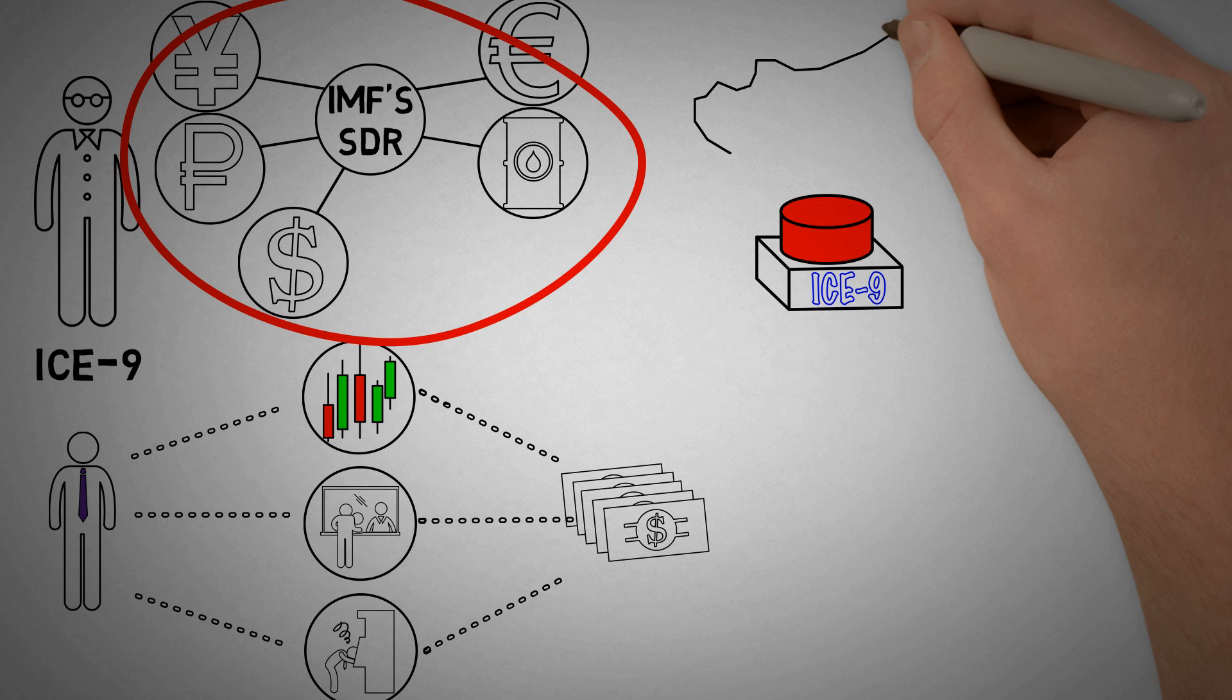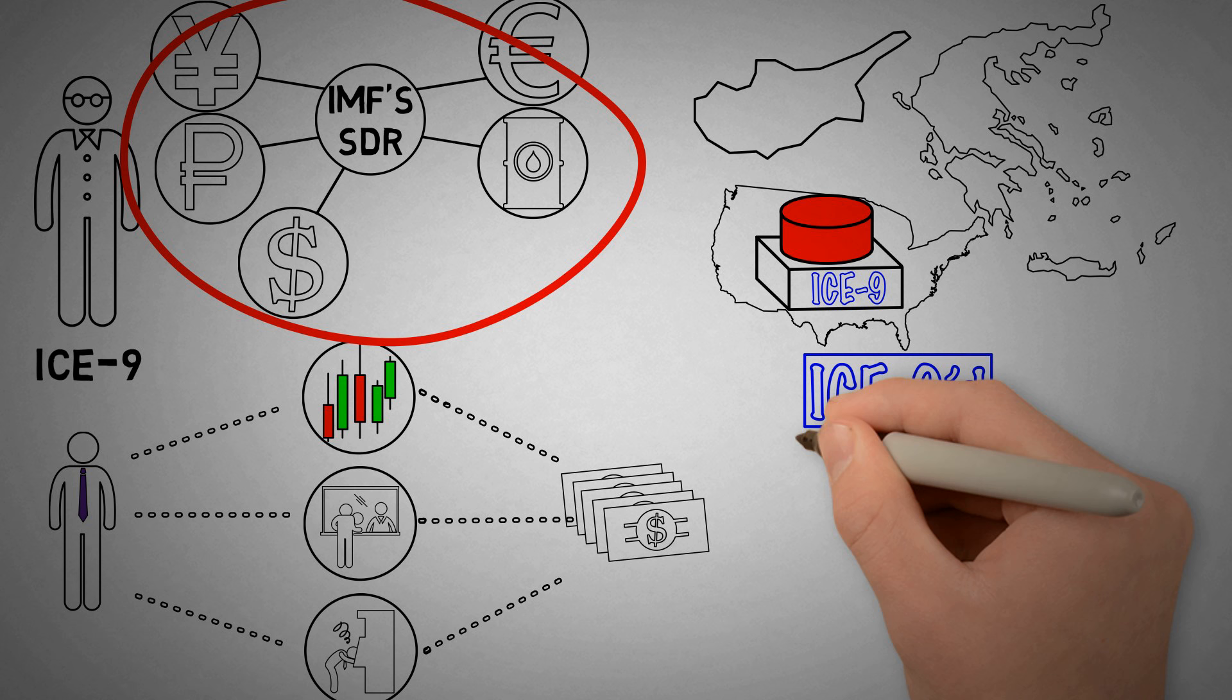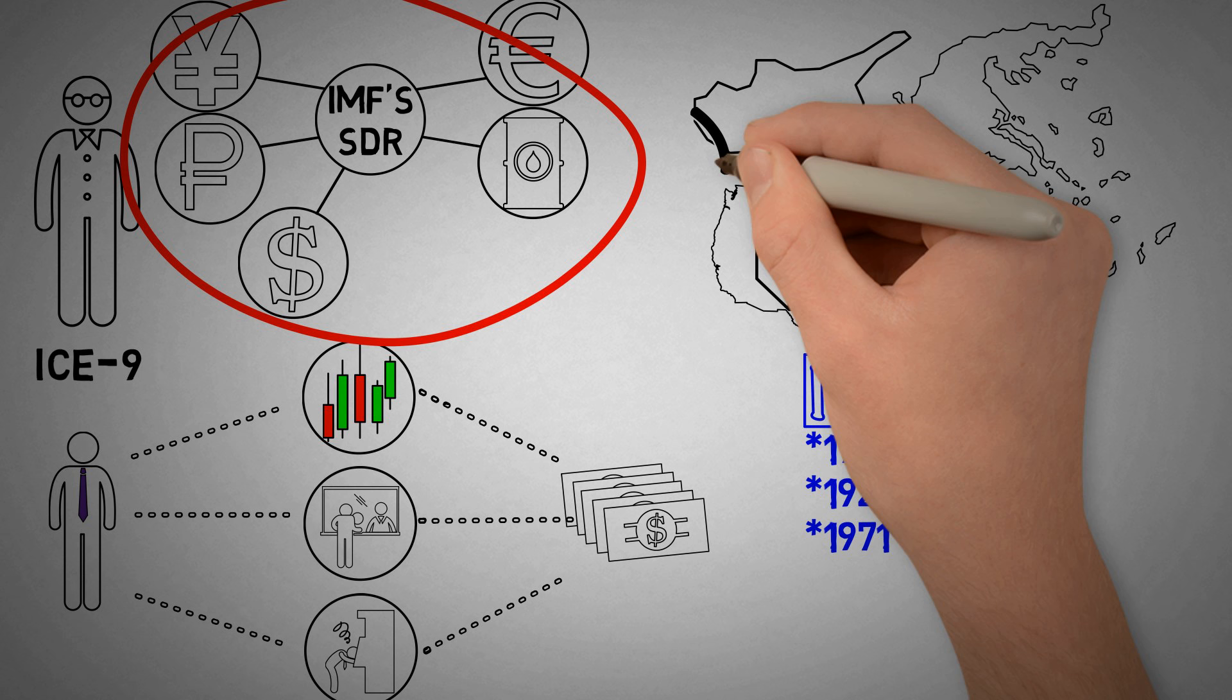Many of you may be thinking that this kind of stuff happens in Cyprus, and Greece, and other third world countries, but not here. But you'd be wrong. In fact, ICE-9 used to be the default option for America, used in the panics of 1907, 1914, 1929, 1939, and 1971. In fact, it's only been since around the 70s that we've started injecting liquidity as the solution.